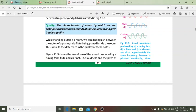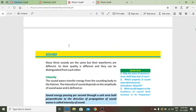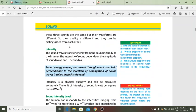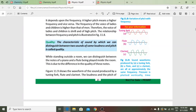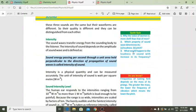Quality kya hai? Quality is that characteristic by which we can distinguish between two sounds of same pitch and same loudness. While standing outside a room, we can distinguish between notes of piano and a flute playing inside the same room because of quality. The loudness and pitch are same for sounds from tuning fork, flute, or clarinet, but waveforms are different, so quality is different and they can be distinguished.